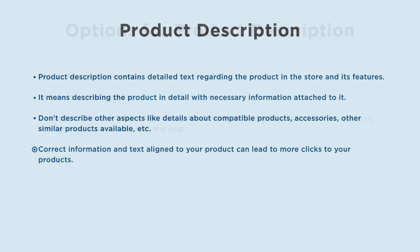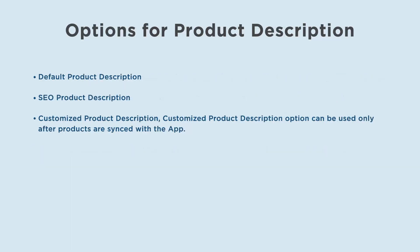The app provides you three different options to submit the product description attribute: default product description, SEO product description, and customized product description. The customized product description option can be used only after products are synced with the app.